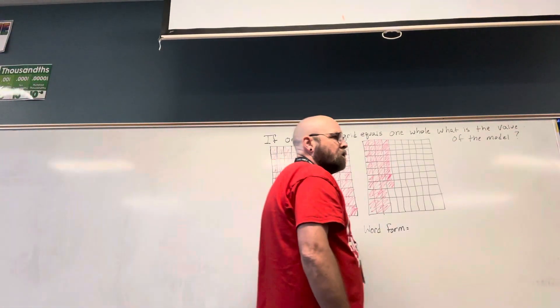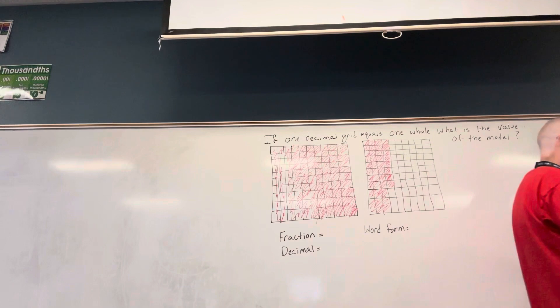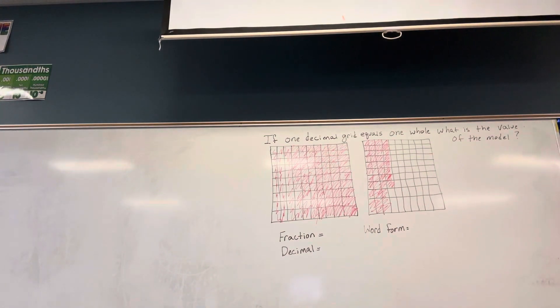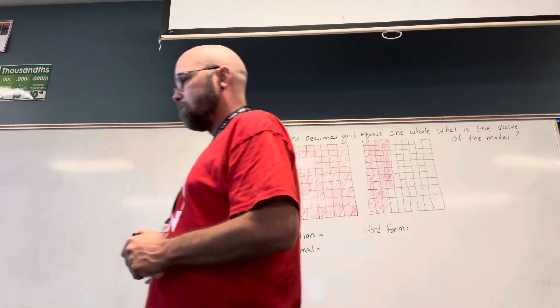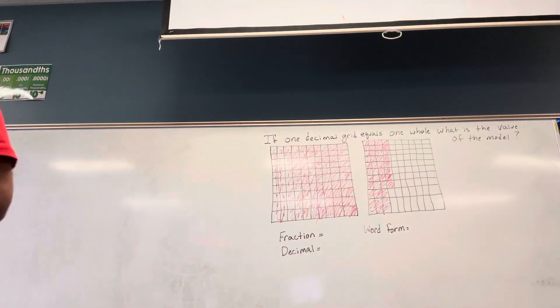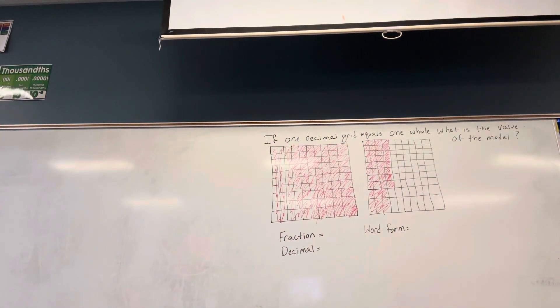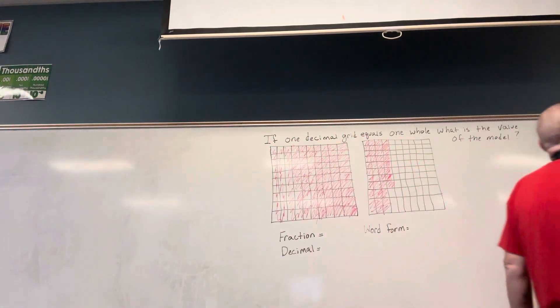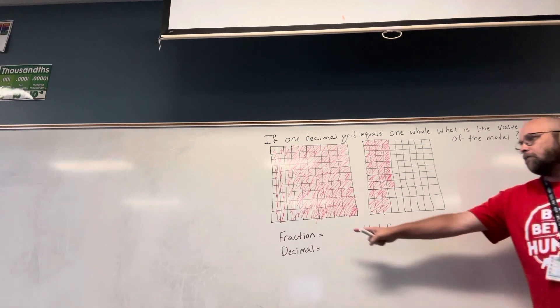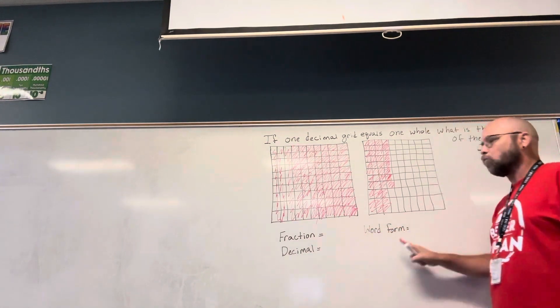Ladies and gentlemen, boys and girls, children of all ages, this was problem number three on the paper you just did. The question asks, if one decimal grid equals one whole, what is the value of the model? You have to write it in fraction form, decimal form, and word form.